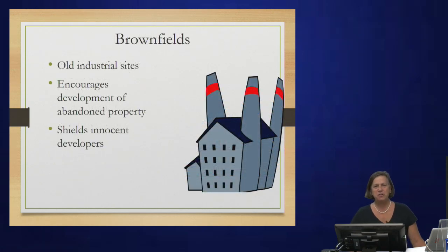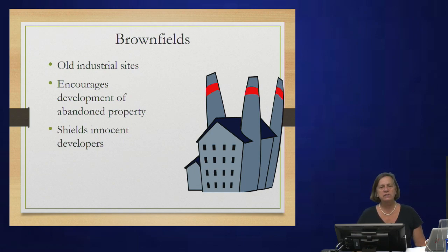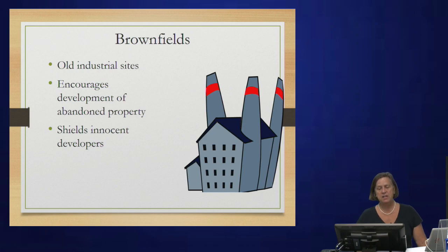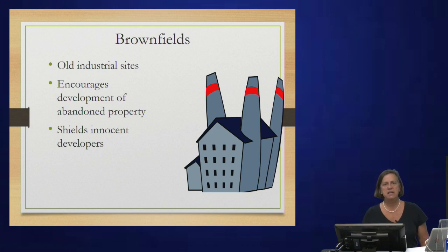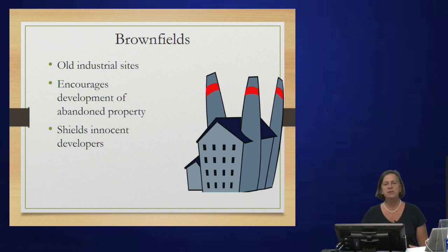As a result of CERCLA, there were certain old industrial sites in cities — and even Farmville had some old industrial sites, shoe factories — that no one wanted to develop or own because they wanted to avoid that potential liability. So these brownfields were given a special status to encourage the development of these abandoned properties. You'll see some of them in Richmond. The designation as a brownfield would shield an innocent developer from liability for cleanup.